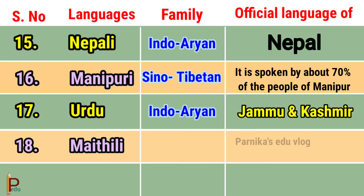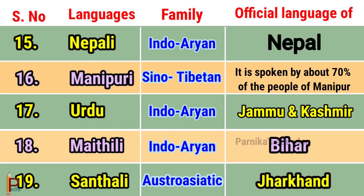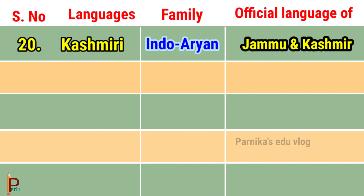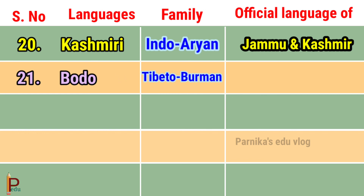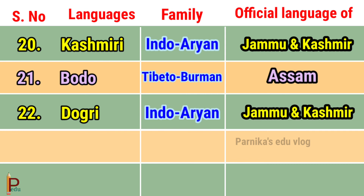Language Maithili belongs to the Indo-Orient family and is the official language of Bihar. Language Bodo belongs to the Tibeto-Burman family.